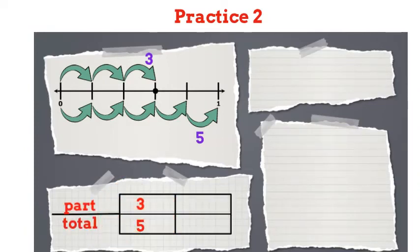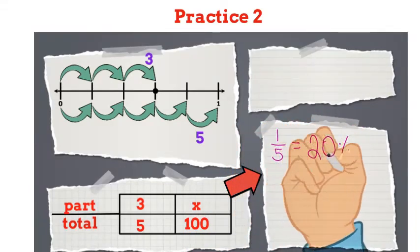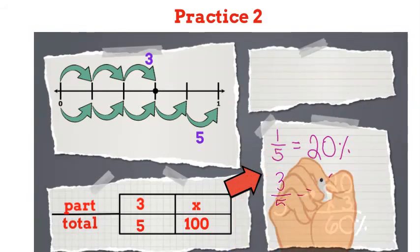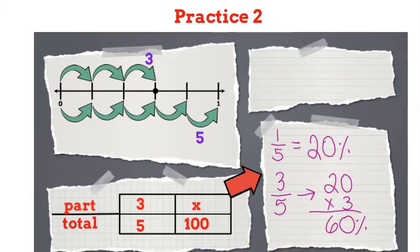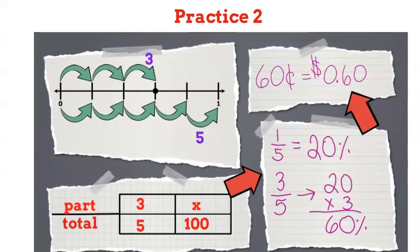We'll use the ratio part to total and our fraction is 3 over 5. To find the percent, I can set this fraction equal to the ratio x over 100. We can solve this proportion directly or we can use the fact that 1 fifth is a benchmark fraction that equals 20 percent. So 3 fifths is simply 20 times 3, which is 60 percent. Remember, to change a percent to a fraction, simply think, how would I write 60 cents with a dollar sign? This is also the same as moving the decimal two places to the left. 60 percent is equal to the decimal 0.60 or simply 0.6.